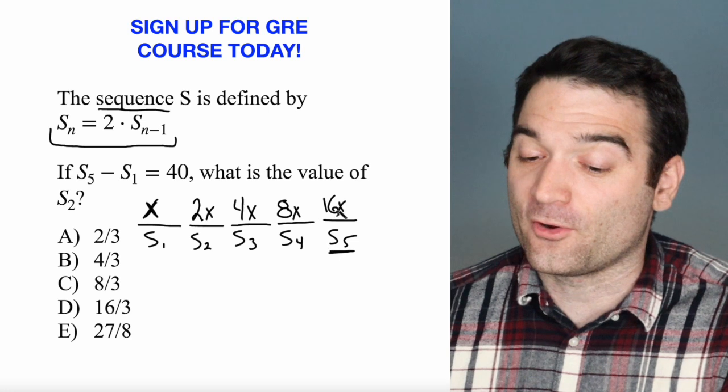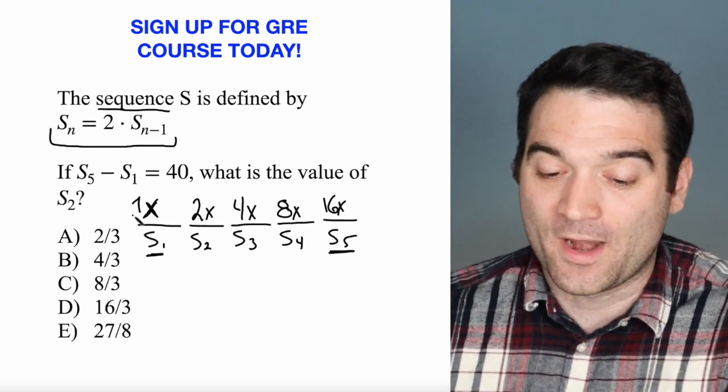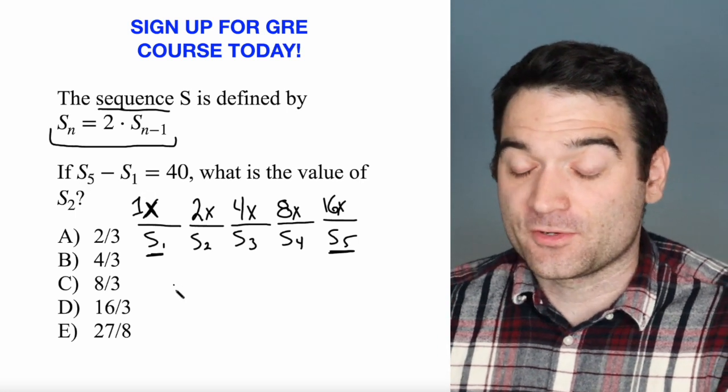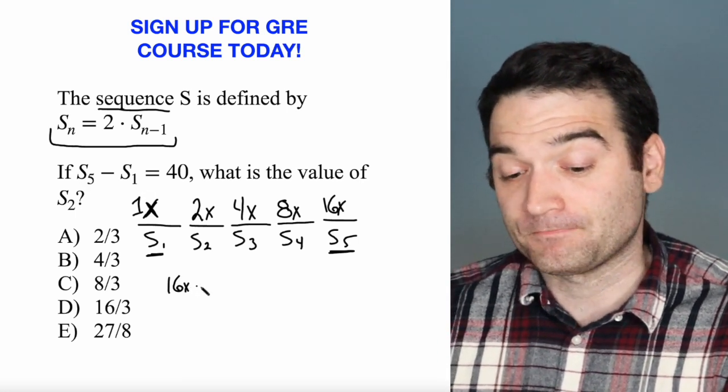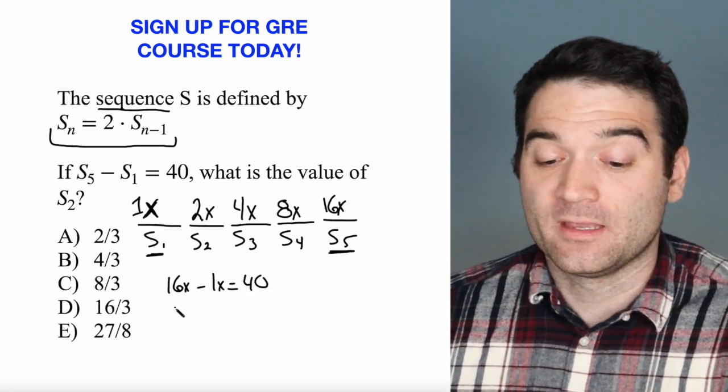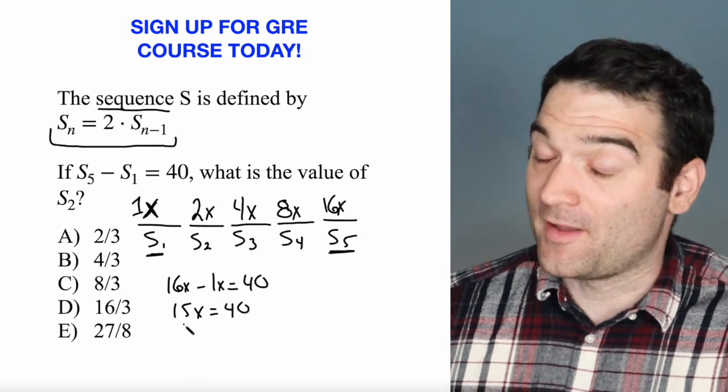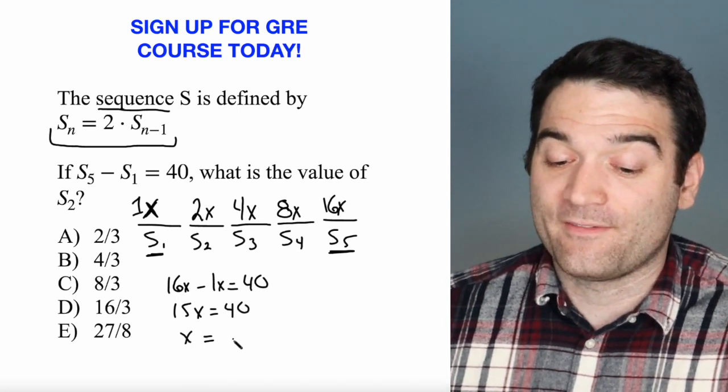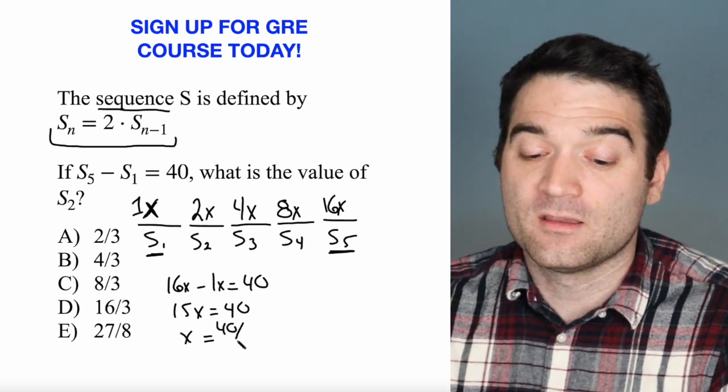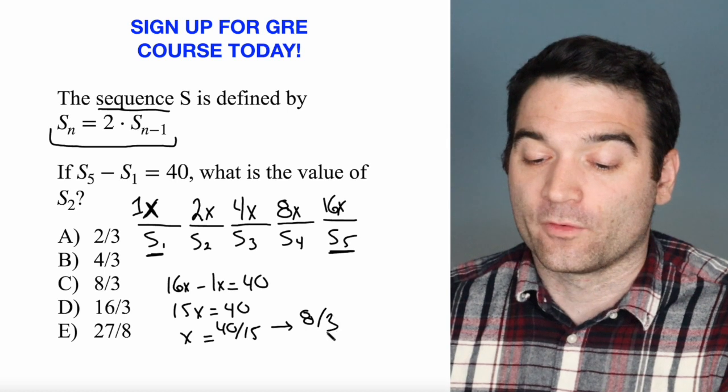All right. So the fifth term is 16X. The first term is X, or let's say 1X. Well, I know that the fifth minus the first, so 16X minus 1X, is equal to 40. Or 15X is equal to 40. And if I divide both sides by 15, I find that X equals 40 over 15. Or if I simplify that down, 8 over 3.